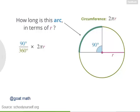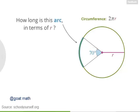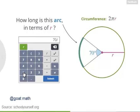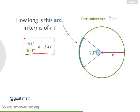Do you see a pattern for finding the length of an arc? Suppose you have an arc whose central angle measures 70 degrees. To find the length, we divide 70 by 360 — that fraction tells us how much of the circle the arc represents. Then multiply by the circumference, 2πr. So for a circle with radius r, an arc of 70 degrees will always have a length of 70/360 times 2πr.